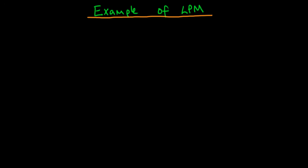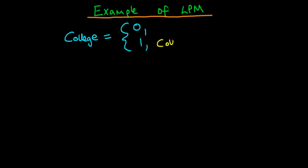In this video, I want to talk through an example of the linear probability model. The example I'm going to talk through here has a dependent variable of whether or not an individual goes to college. This dependent variable is a binary dependent variable because the variable takes on a value of 1 if an individual does attend college and a 0 otherwise.